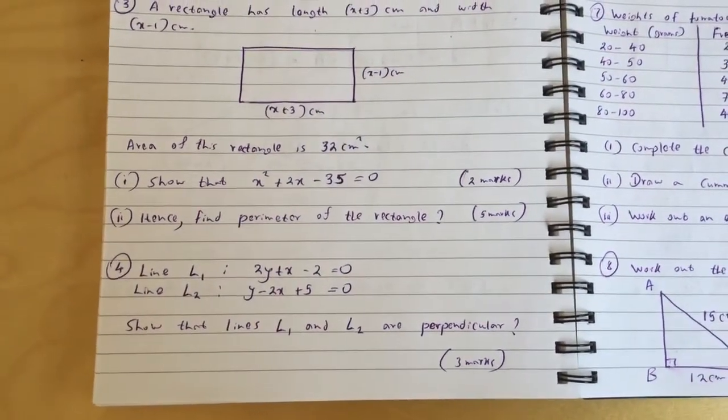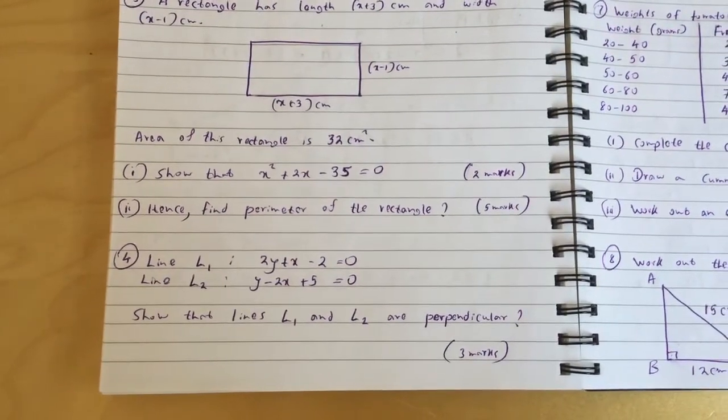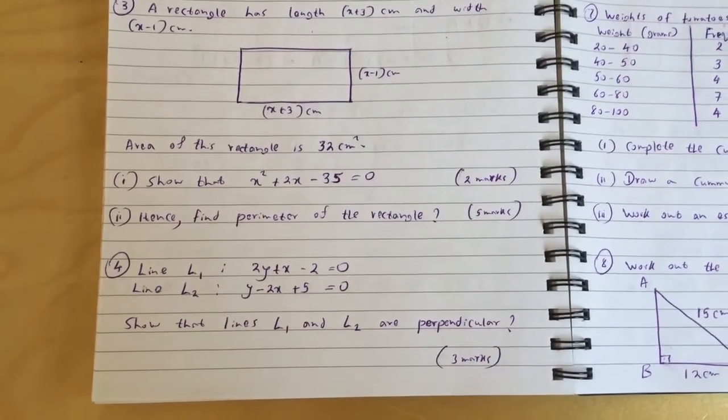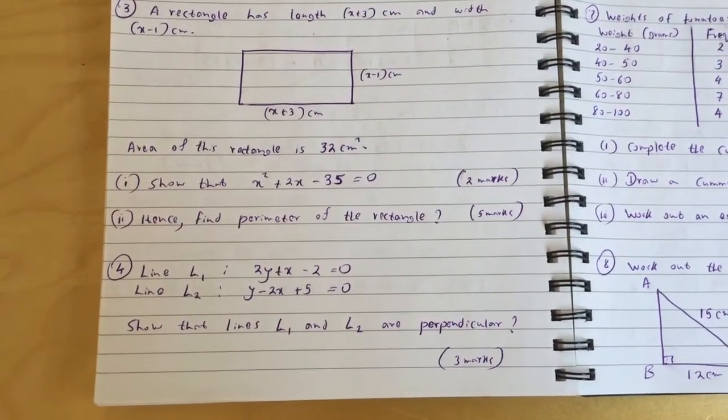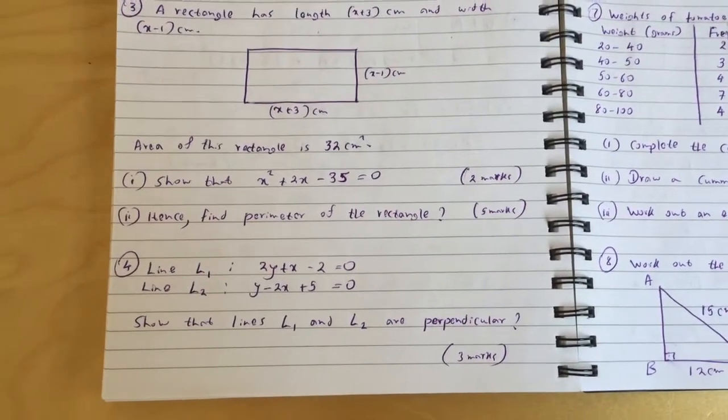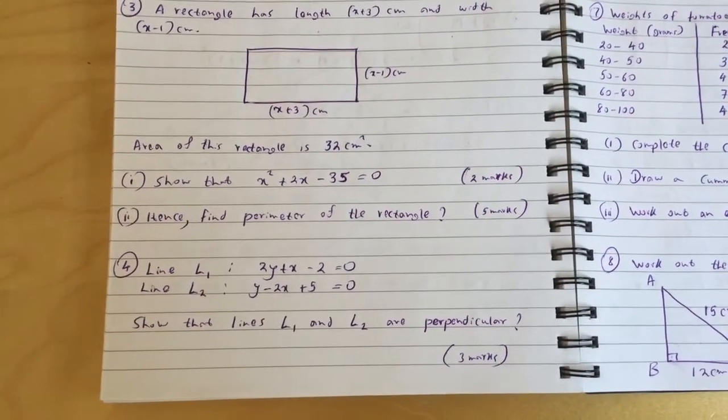Question 4: Line L1: 2y plus x minus 2 equals 0. Line L2: y minus 2x plus 5 equals 0. Show that lines L1 and L2 are perpendicular.